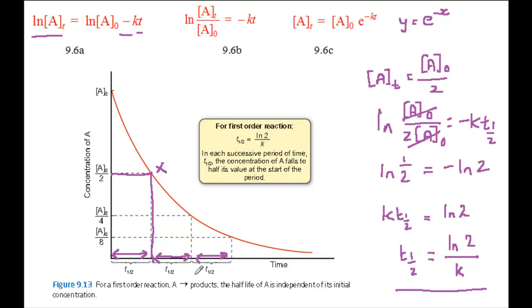For a first-order reaction, these values of t a half will all be the same within experimental error. You can use half-lives obtained in this way to decide whether a reaction is first-order. And since t a half equals log 2 over k, you can use the half-life to obtain a value for the rate constant k for the reaction.